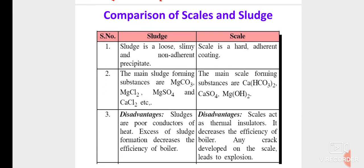Comparing scale and sludge: sludge is a loose, slimy, non-adherent precipitate on the inner walls of the boiler — remember 'S' for sludge means soft/loose, slimy, non-adherent. Scale is a hard, adherent coating inside the boiler. Examples of sludge: magnesium carbonate, magnesium chloride, magnesium sulfate, calcium chloride. Examples of scale: calcium bicarbonate, calcium sulfate, magnesium hydroxide. For examination purposes, write at least two examples of each — sludge and scale.